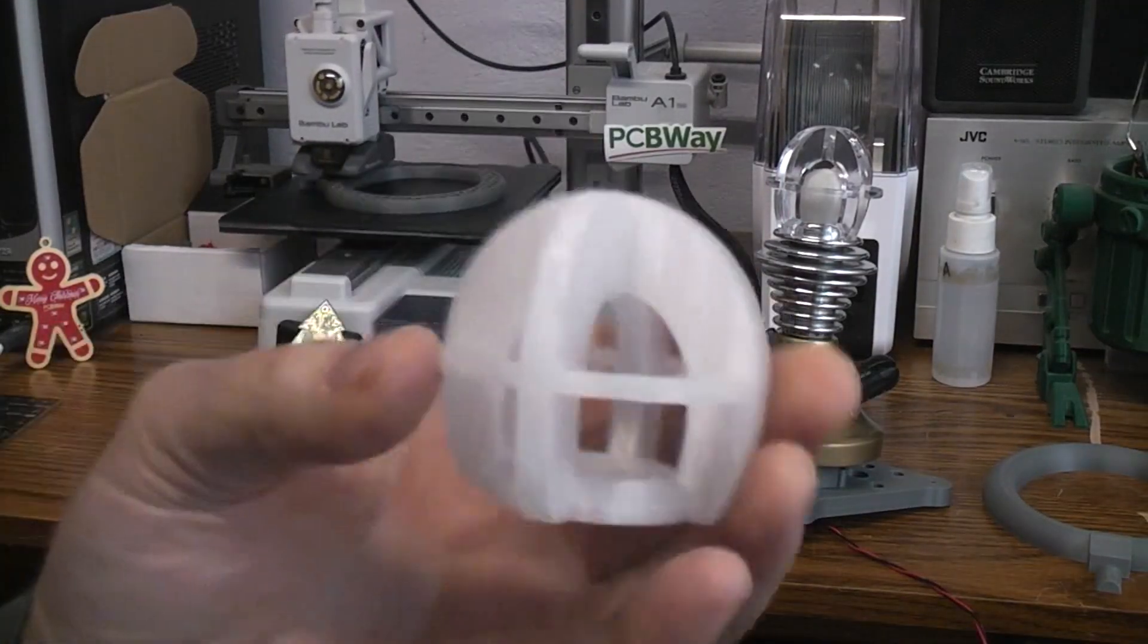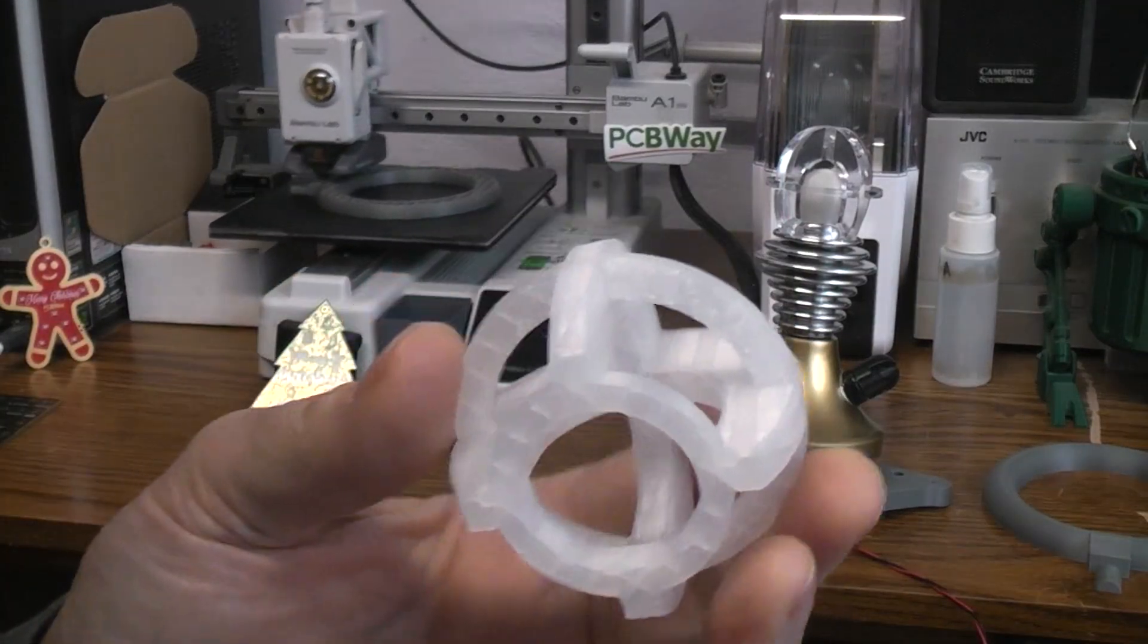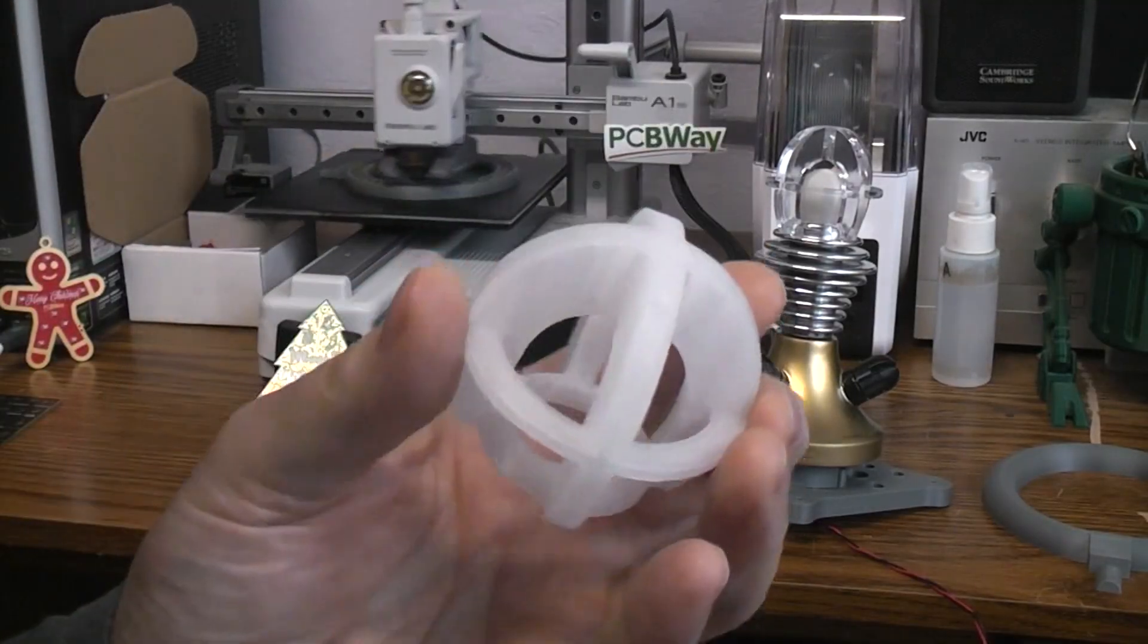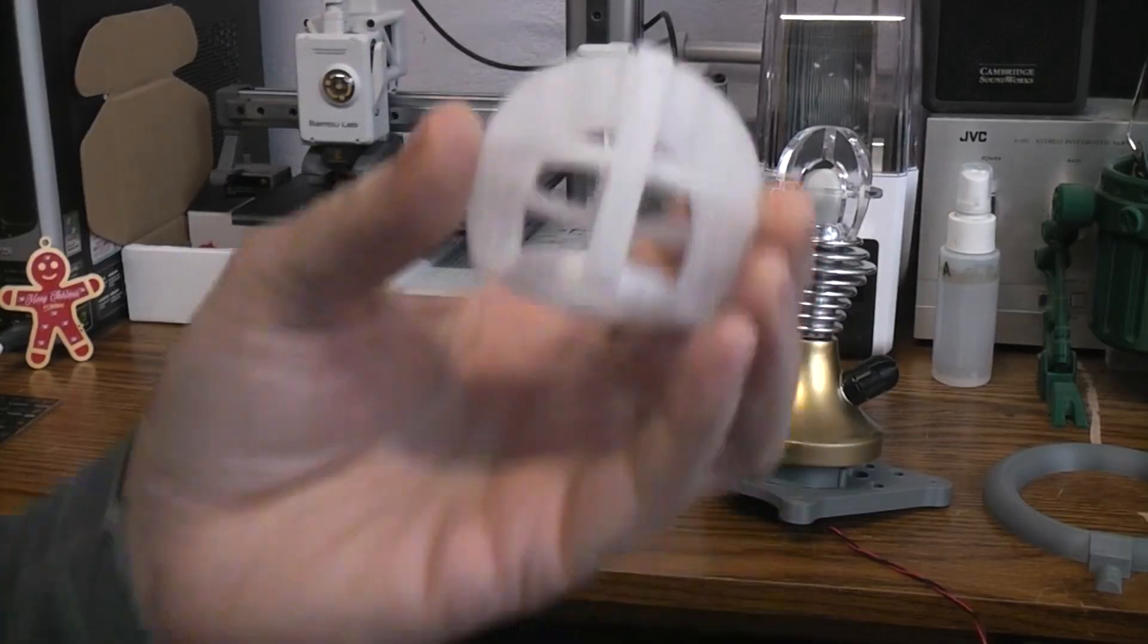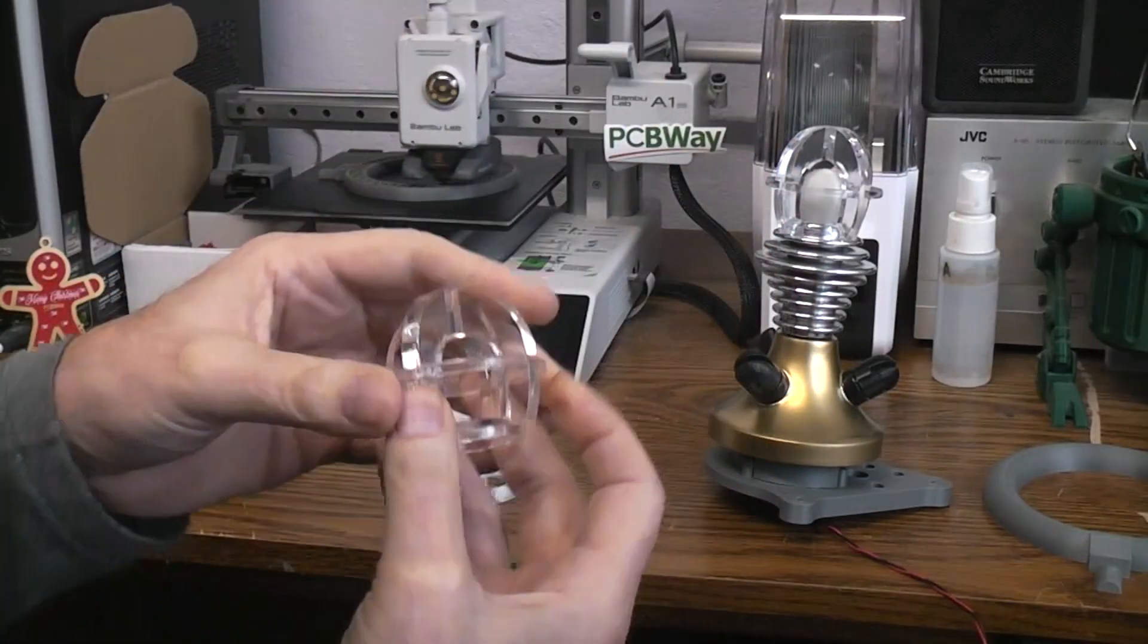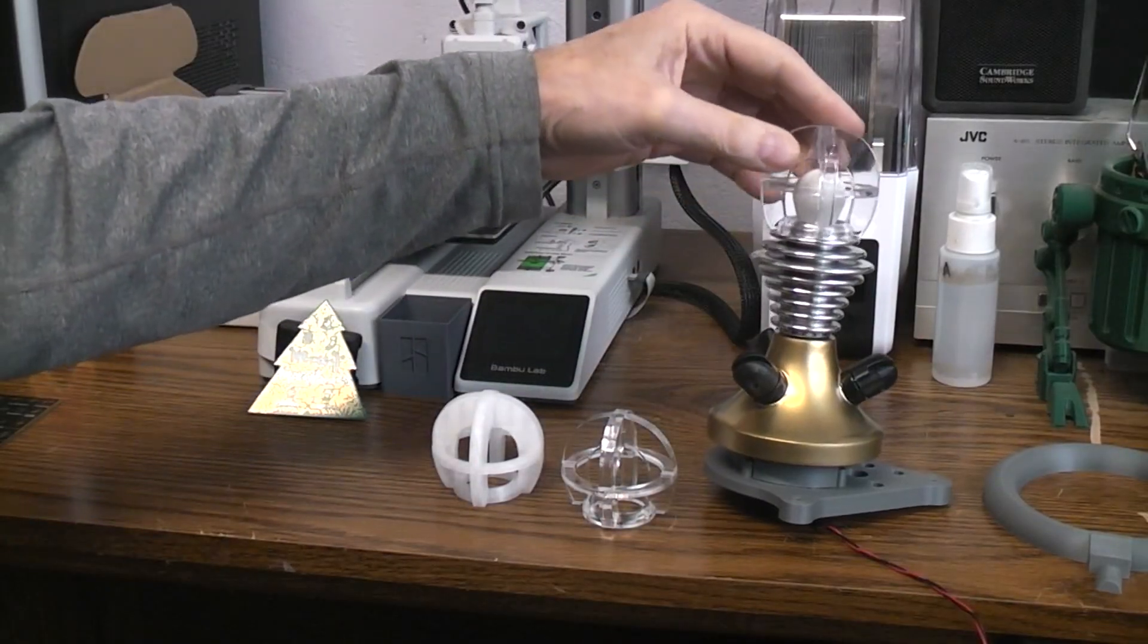Obviously you can do this on your FDM printer with some supports that you break out, and this is going to cost you a buck or less probably to do. But it's also going to look like this and not clear like what you are hoping to get in your final design.